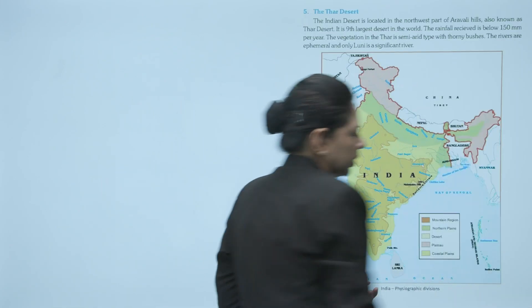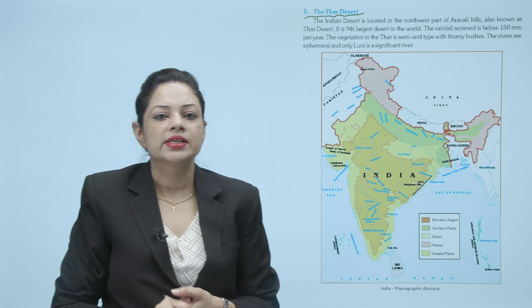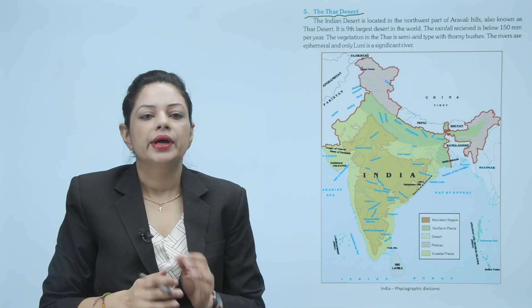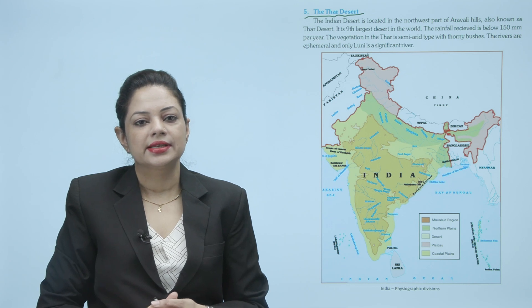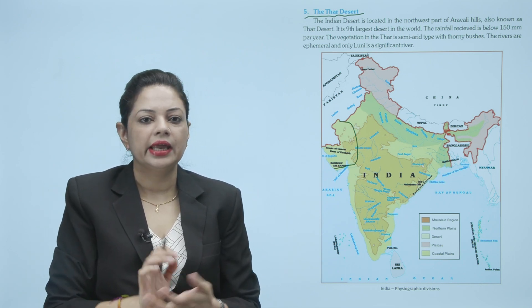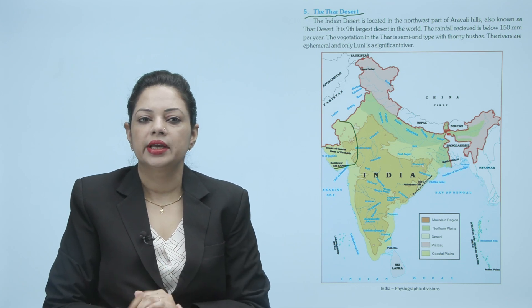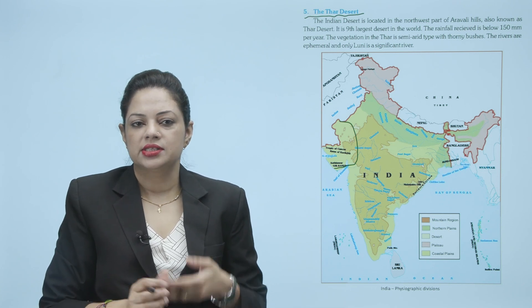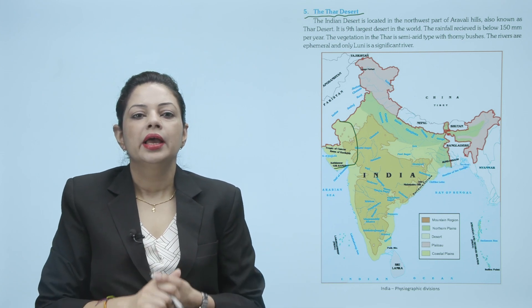Now the Thar Desert. The Indian desert is located in the northwest part of the Aravalli Hills, also known as Thar Desert. It is the ninth largest desert in the world. The rainfall received is below 150 mm per year. The vegetation in the Thar is semi-arid type with thorny bushes. The rivers are ephemeral and only Luni is a significant river. Thar Desert — yeh Rajasthan ka desert hai, Indian desert ko Thar Desert ke naam se jaana jaata hai. Yeh ninth largest desert in the world hai. Rainfall 150 mm se bhi kam hoti hai annually, vegetation na ke barabar hai, sirf semi-arid type hoti hai — kaante daar jhaadiyaan sirf wahi grow hoti hain. Aur yahaan par sirf ek hi river hai, Luni river, jo wahaan paani ka source hai.